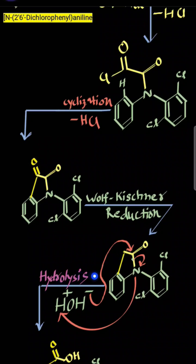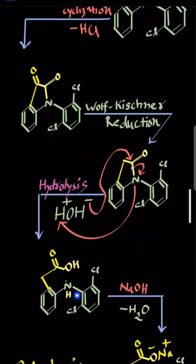Next we will perform hydrolysis using dilute acid. The OH⁻ part will undergo nucleophilic addition onto the carbonyl carbon, this bond will break, and the electron pair will come onto the nitrogen atom. That electron pair will grab a proton, so this becomes NH, and OH is added to form the acid. Here you can see the acid product with its hydrogen and acid parts.